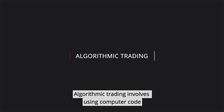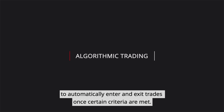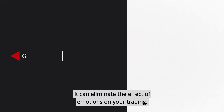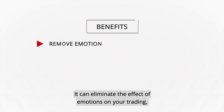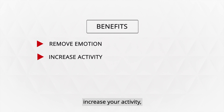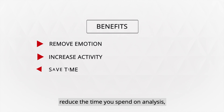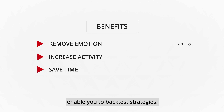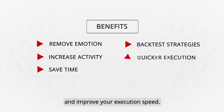Algorithmic trading involves using computer code to automatically enter and exit trades once certain criteria are met. It can eliminate the effect of emotions on your trading, increase your activity, reduce the time you spend on analysis, enable you to backtest strategies, and improve your execution speed.